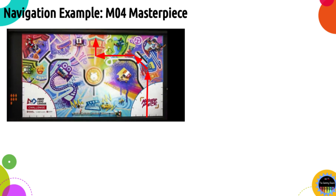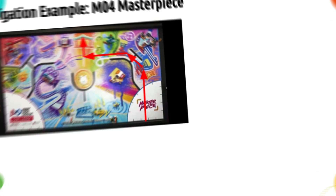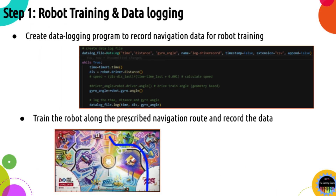Now let's see how we can apply machine learning to help navigation. We'll first create a Python data logging program to record the robot navigation data during the training. Here, we record the distance traveled and the gyro angle, or where the robot is heading. This recorded data will help to create a trend line to define the robot's navigation route.